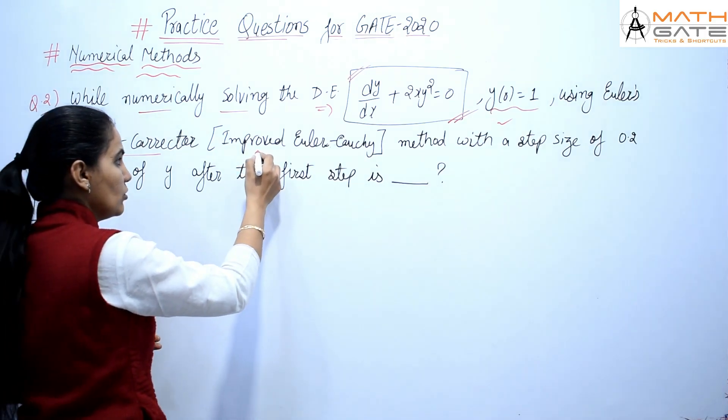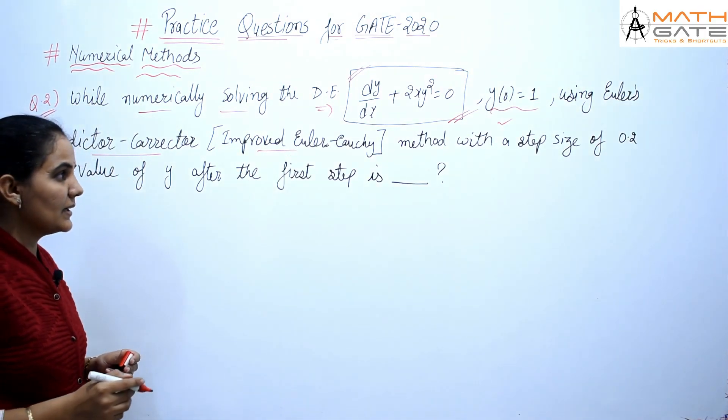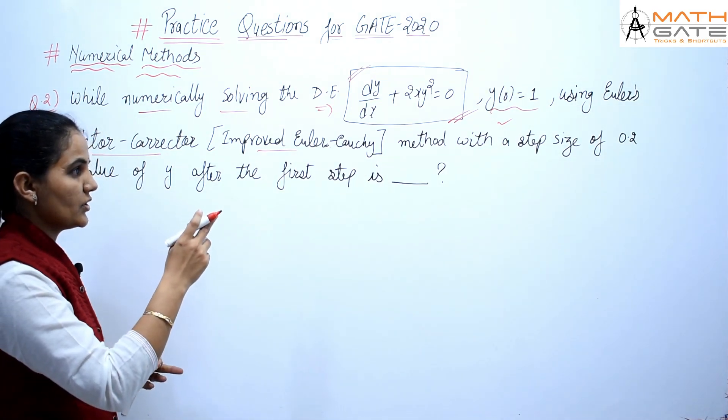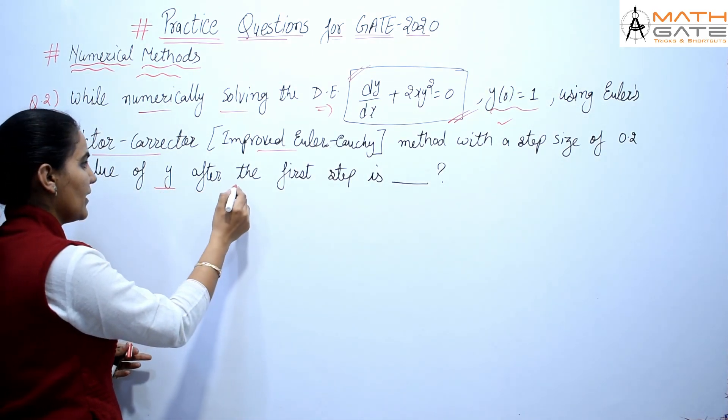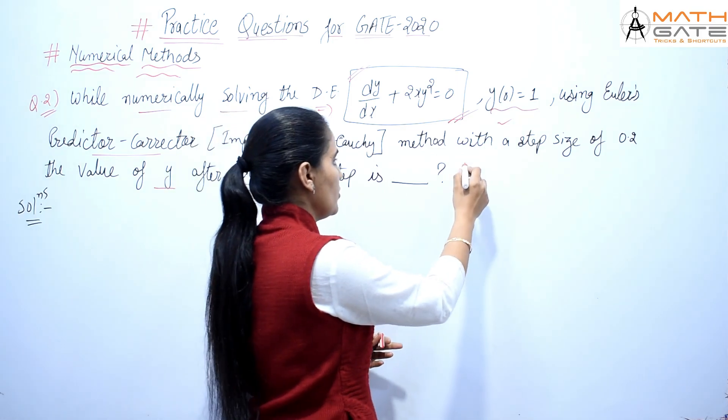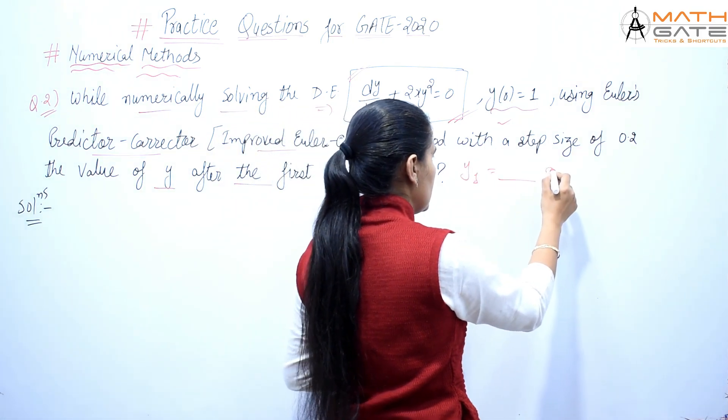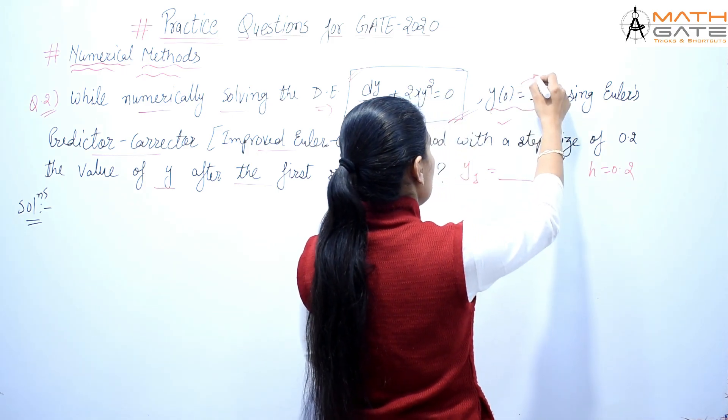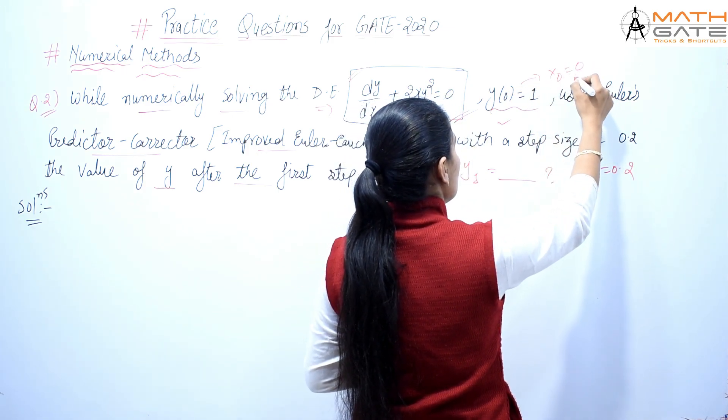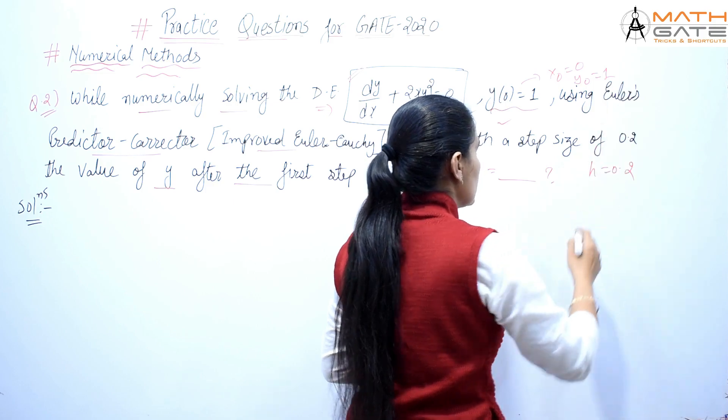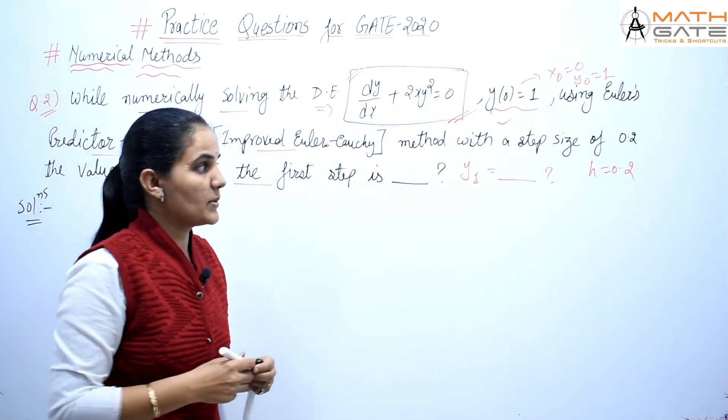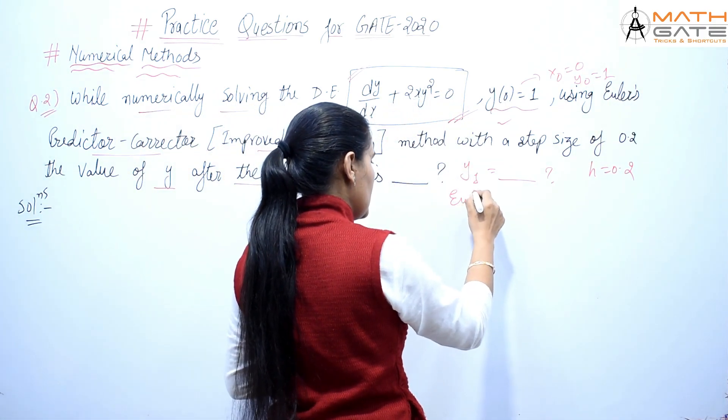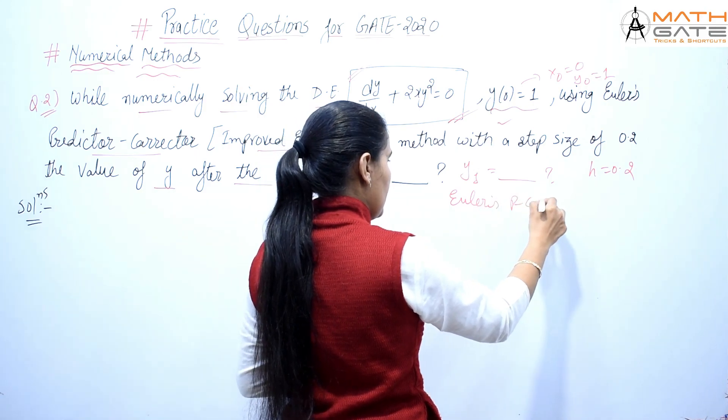...also called modified Euler method or improved Euler-Cauchy method, with a step size of 0.2, the value of y after the first iteration is what you have to find. So find y₁ given h = 0.2, x₀ = 0, y₀ = 1. First, let's talk about Euler's predictor-corrector method.